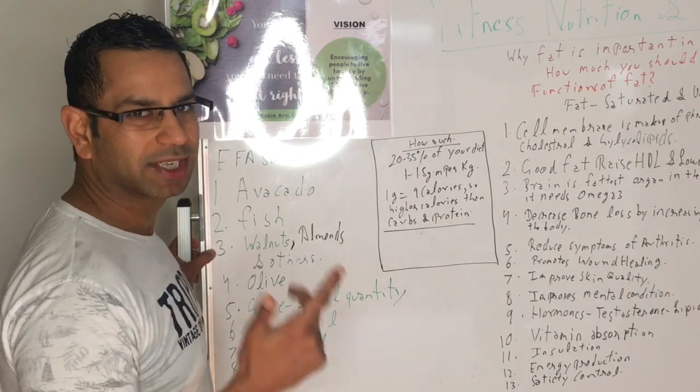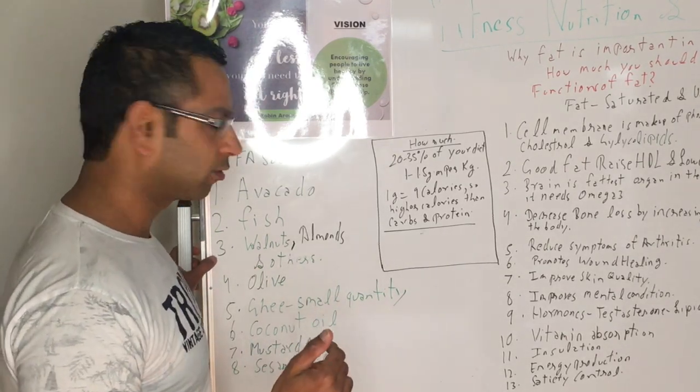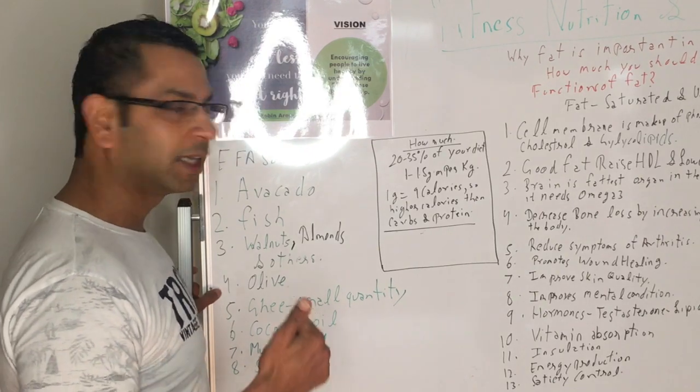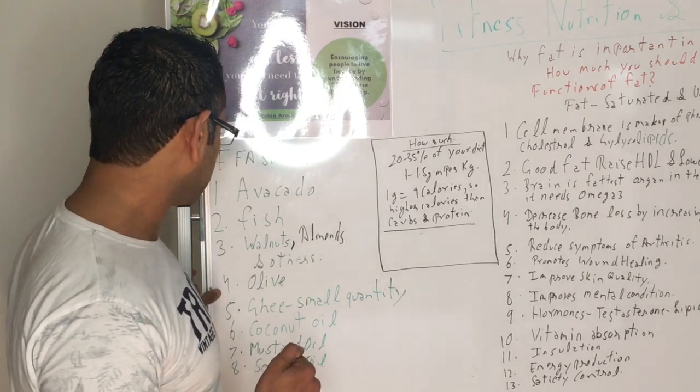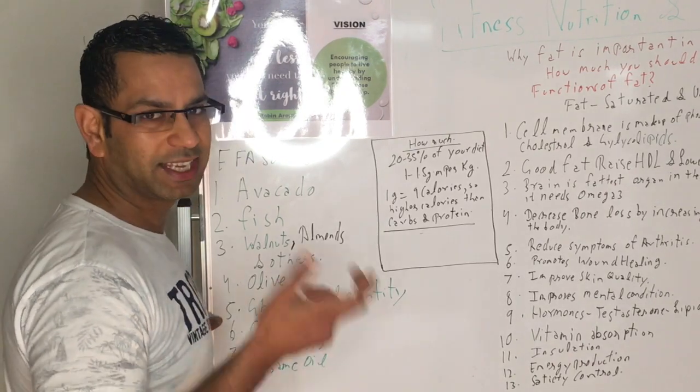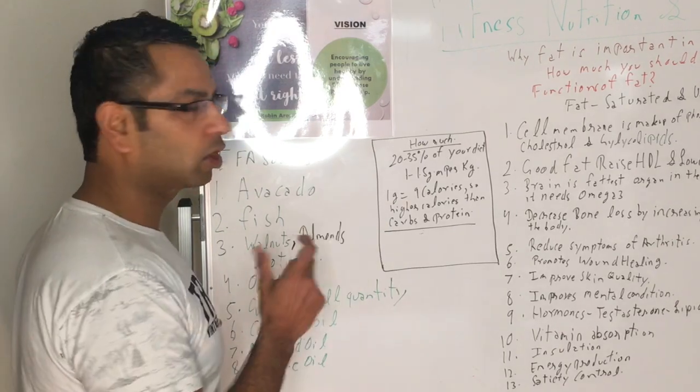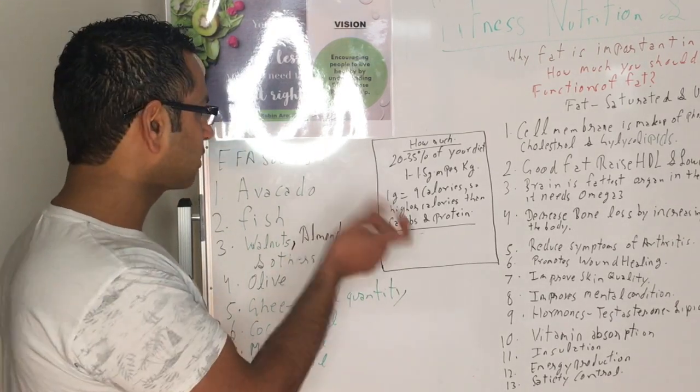Fourth is olive oil, just in moderation. Fifth is ghee, again in small quantity. You need saturated fat in your diet, but I think the recommendation is only 10 or 20% should come from saturated fat. Sixth is coconut oil, rich in MCT, which is medium-chain triglycerides, and also a good source of saturated fat.